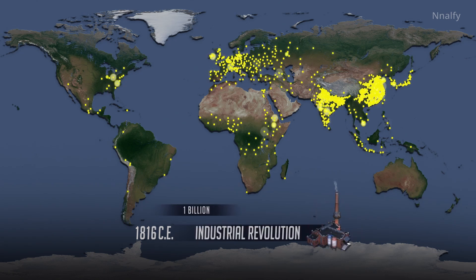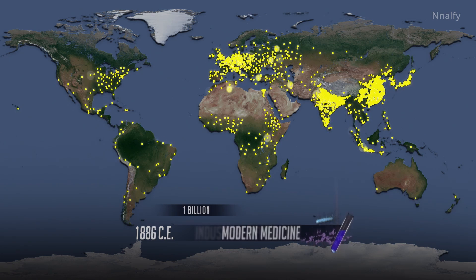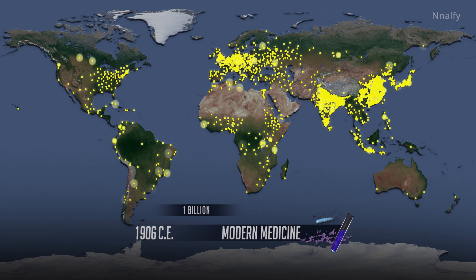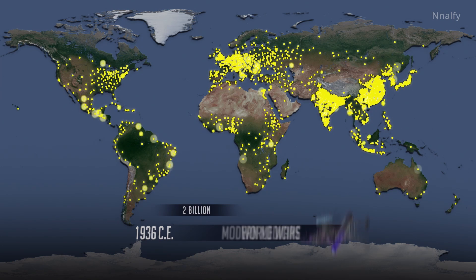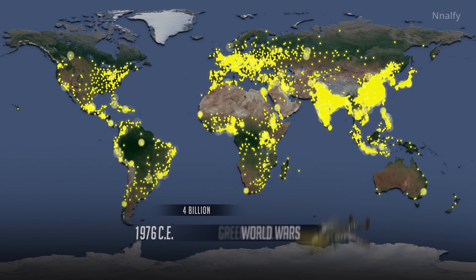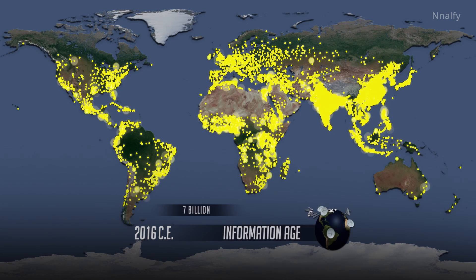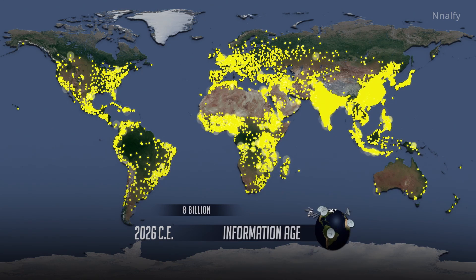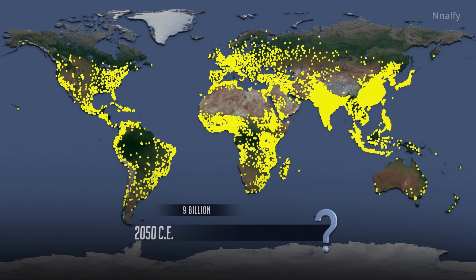Industrial Revolution: the 18th and 19th centuries bring advances in food production, water supply, sanitation, transportation, and disease control. Advances in medicine and a new understanding of how diseases spread lead to preventions and treatments. Icons representing the world wars, the green revolution, and the information age appear quickly during this segment. In 2050, you may want to pause the video at this point, with world population over 9.5 billion.